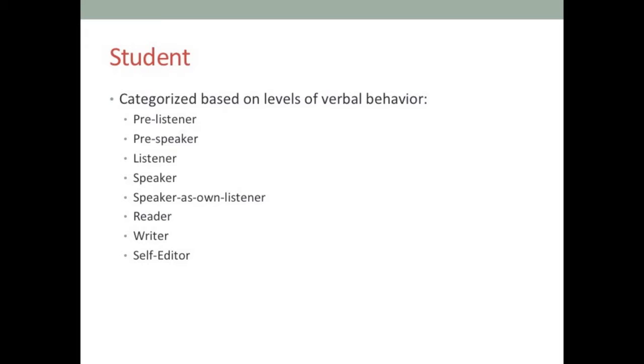Students who are listeners might be working on following focal directions, identifying objects, and finding things in the environment. A student who is a pre-speaker is someone who is not yet able to communicate their wants and needs in any way. You might have worked with these types of students — when they want something they emit behaviors that are not functional but still get what they want. These are students who don't have any communication.